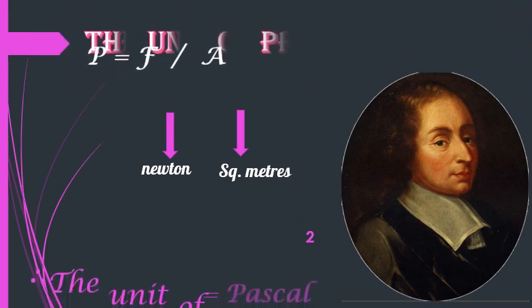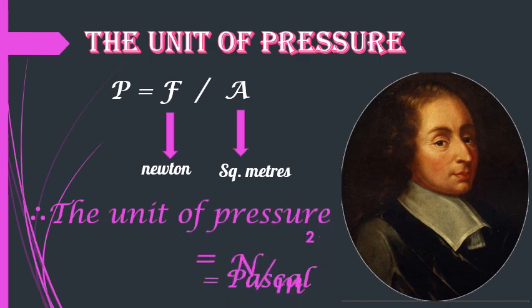Let us now learn the units in which pressure is measured. Pressure is equal to force upon area. The SI unit of force is Newton and the SI unit of area is meter square. So the SI unit of pressure is Newton per meter square. This Newton per meter square is known as Pascal, in honor of French physicist Blaise Pascal. So the SI unit of pressure is Pascal or Newton per meter square — both are the same. One Newton per meter square equals one Pascal.